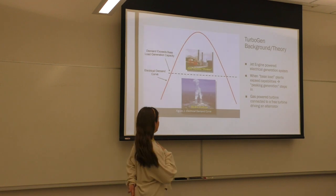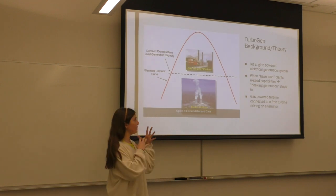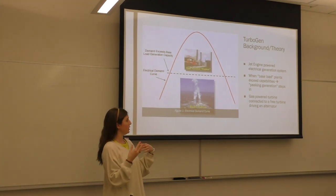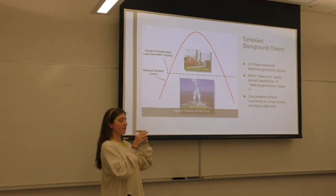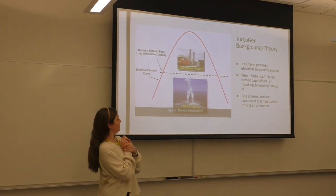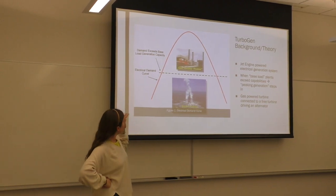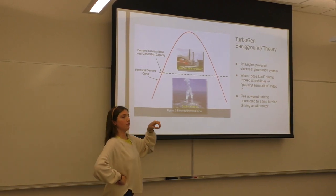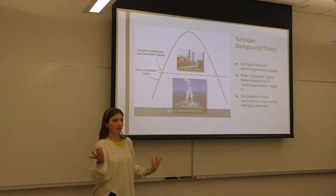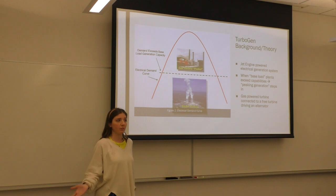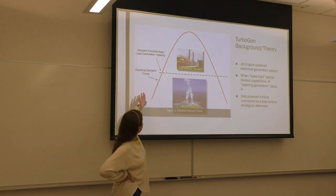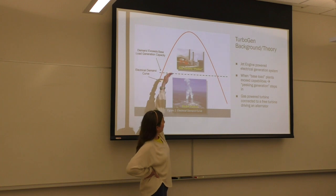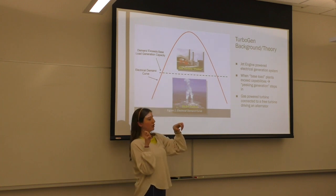So a little background just before jumping in. Basically, TurboGen is a form of power electricity generation. And basically the jet engine that we're using, it kicks in whenever the base load generation plants aren't able to keep up with the demand. So on hot days, which is like 50% of the year, maybe like 75% of the year here, it's hot. So whenever the need for AC is high, it'll surpass this and that's when the peak generation kind of starts.